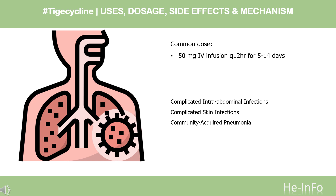Dosing: Complicated intra-abdominal infections — Initial: 100 mg infusion, then 50 mg infusion Q12HR for 5 to 14 days. Complicated skin infections — Initial: 100 mg infusion, then 50 mg infusion Q12HR for 5 to 14 days. Community-acquired pneumonia — Initial: 100 mg infusion, then 50 mg infusion Q12HR for 7 to 14 days.